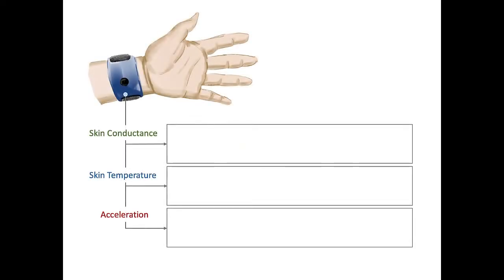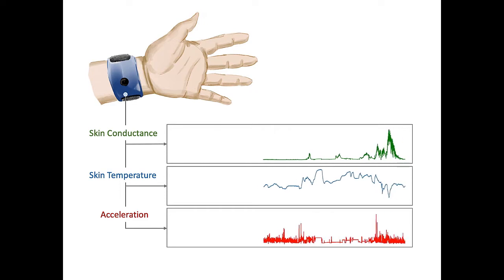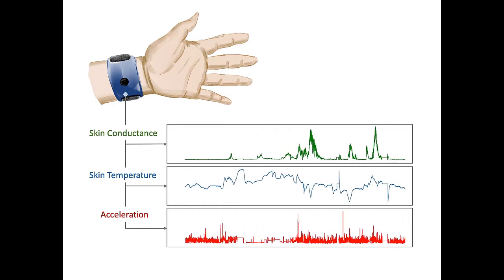We can achieve that by predicting accurate well-being scores using passive sensing data. Our data were collected by Empatica E4 sensor, which can continuously log skin conductance, skin temperature, and acceleration data in high resolution.